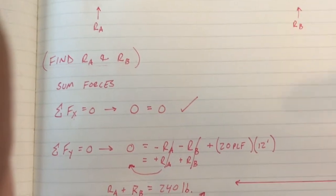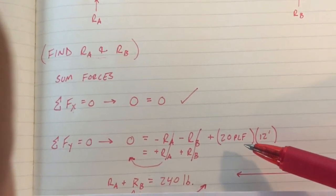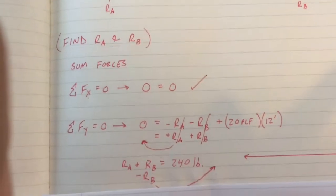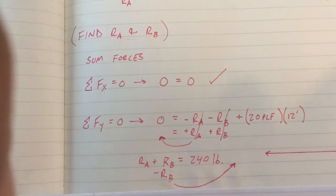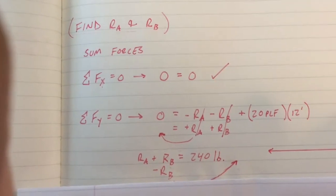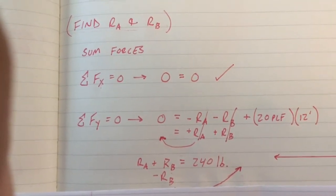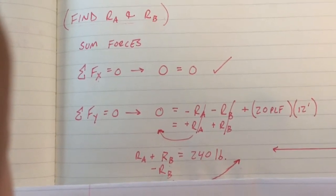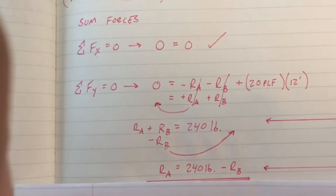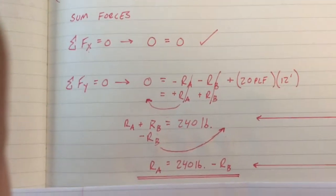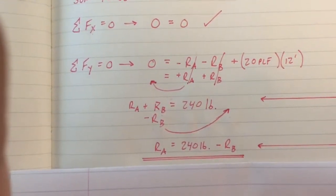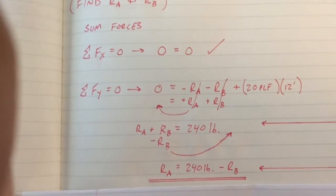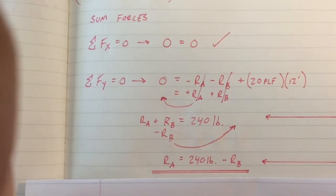The 240 pounds is 20 pounds per linear foot times a distance of 12 feet. Now let's try to split up both of our reactions. I'm going to be subtracting the positive RB value over to the right hand side, giving us a final equation of RA equals 240 pounds minus RB. This is as far as we can go with this equation, so we're going to need some additional information.